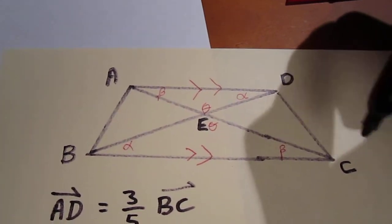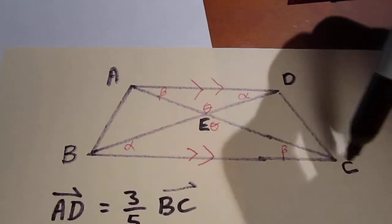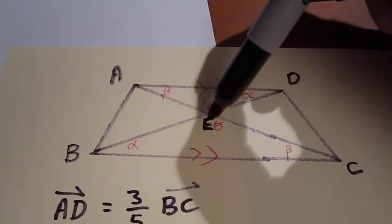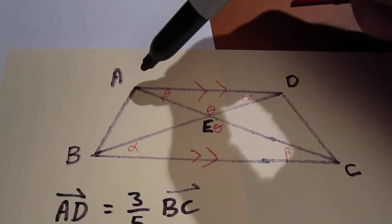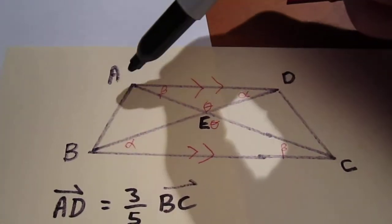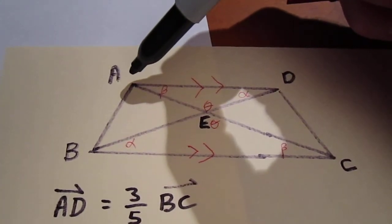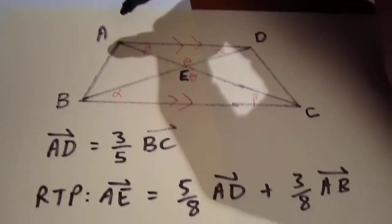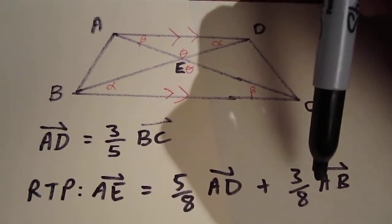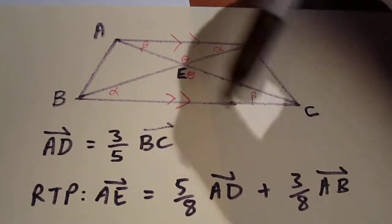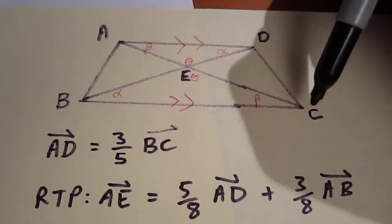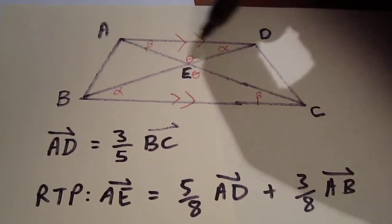Why would we do that? Because AC is in the same direction as AE. AB is clearly in the same direction as 3 eighths AB. And BC is clearly in the same direction as 5 eighths AD.